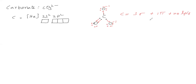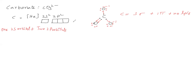In carbonate, carbon has 3 sigma bonds and 1 pi bond, with no lone pairs. Since carbon has 3 sigma bonds, it must provide 3 hybrid orbitals. One 2s orbital and two 2p orbitals undergo intermixing; one 2p orbital remains pure and is not going for intermixing — it is needed for pi bonding.